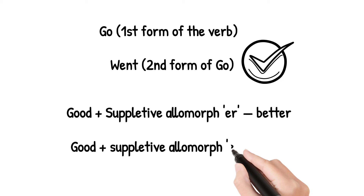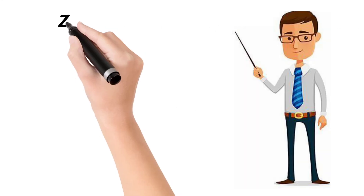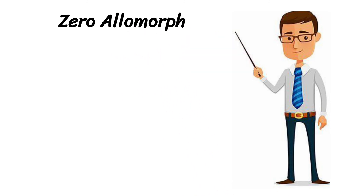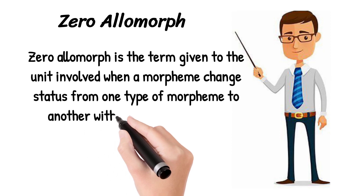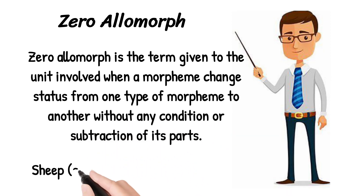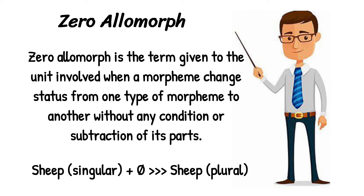Now we are moving towards the last type of allomorph, which is the zero allomorph. Zero allomorph is the term given to the unit involved when a morpheme changes status from one type to another without any addition or subtraction of its parts. The most popular example is the word 'sheep', which is both singular and plural — so when there is no change in the word but it is performing a different function or has different meaning, we say that a zero allomorph is present.